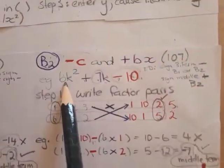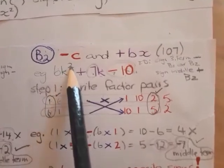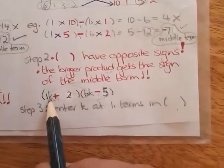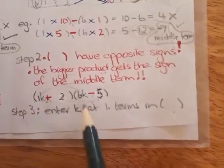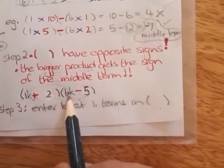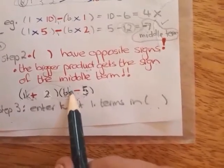And then at the last step, you must enter the K. Why? Because it comes from your first term. Your first term is K squared. So in the first bracket with the first term, enter your K. In the first term with your second bracket, enter the K.